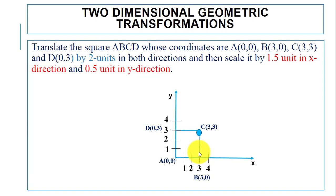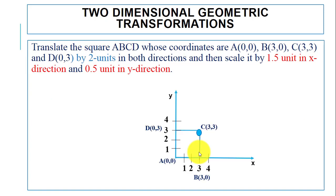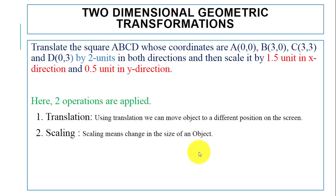We are now going to translate this square by two units in both directions. Translation means we can move the object to different positions on the screen, and scaling means we can change the size of the object. So first we will move this square, and after that we will change its size.